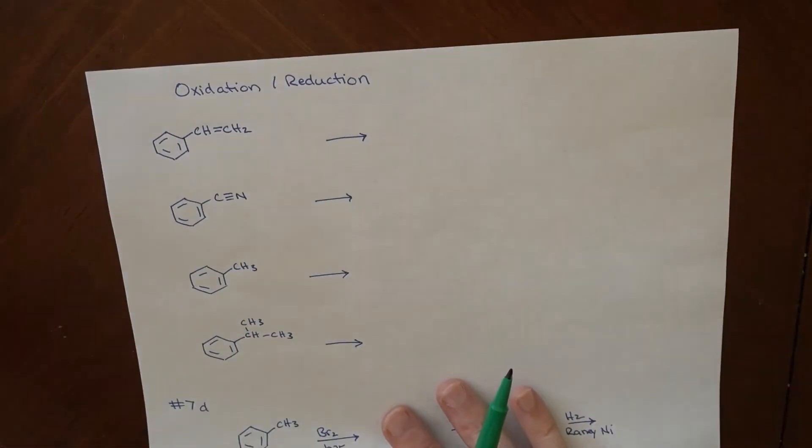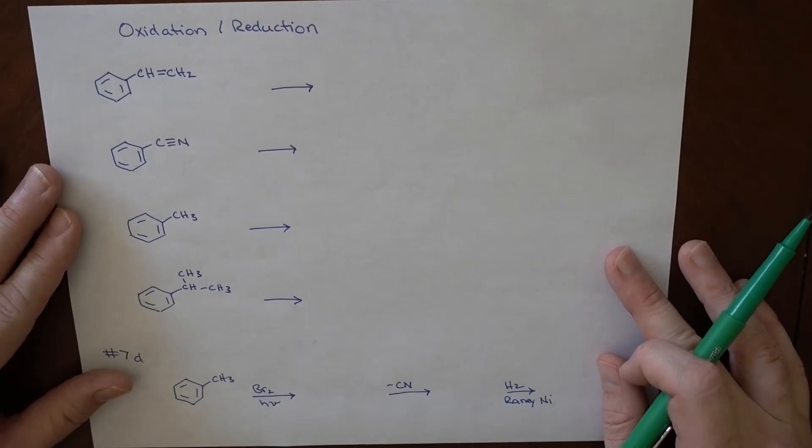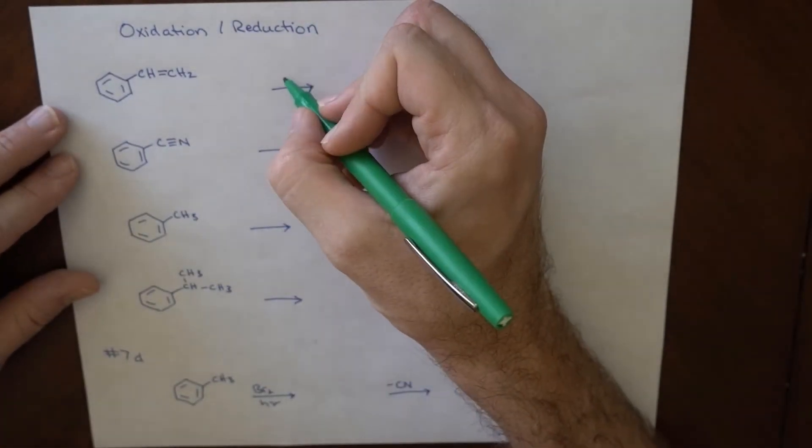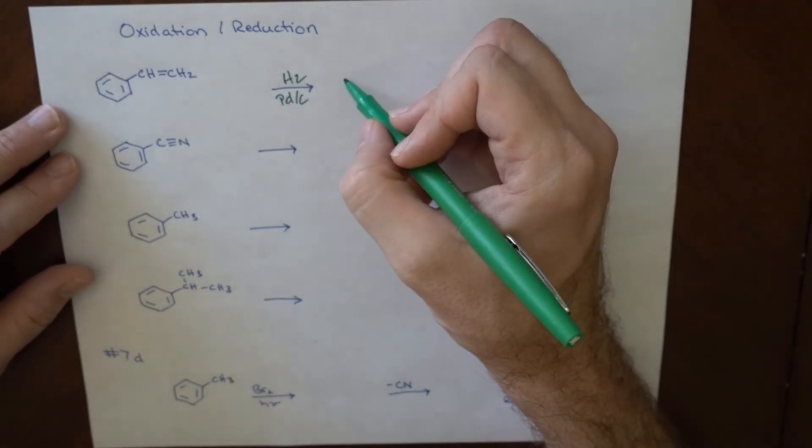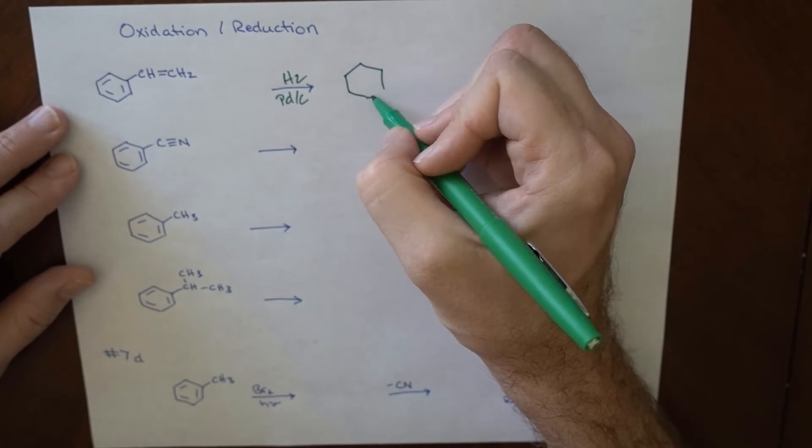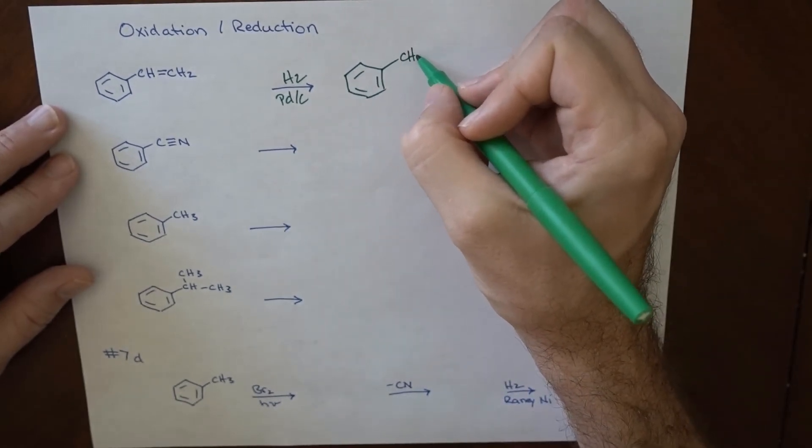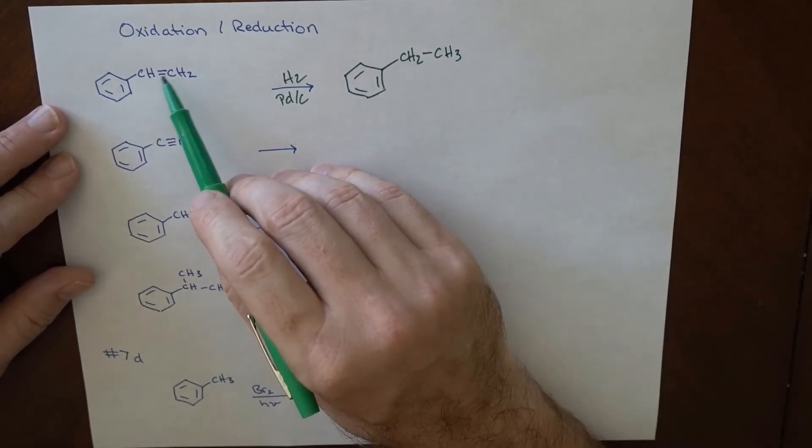So substitution and elimination are not the only things that we can go through and make. We can also do some oxidation and reduction. So starting here with the reduction, if we have hydrogen on a palladium over carbon catalyst, our benzene ring is not very easily reduced. So we can end up making CH2CH3, basically eliminating the double bond there, adding across it.